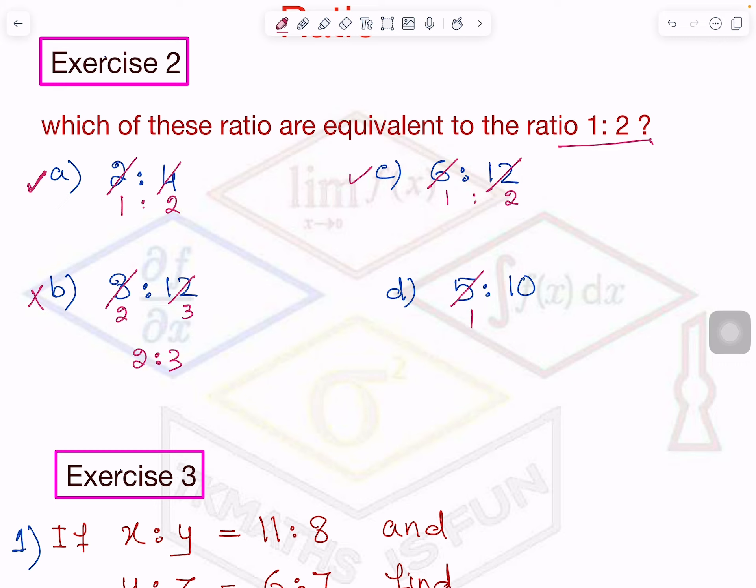Here, 5 times 1 is 5, 5 times 2 is 10. So again I am getting 1 is to 2. So there are these three ratios which are equivalent to 1 is to 2.